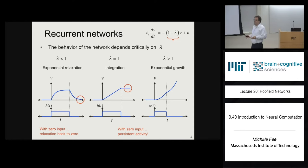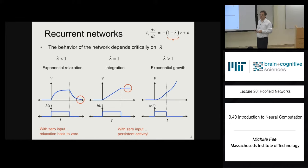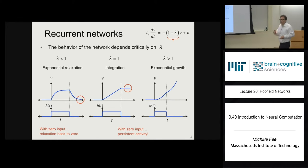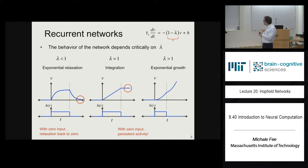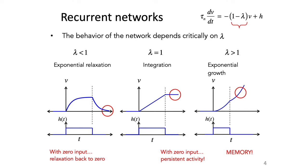Neurons in the brain don't have firing rates that just keep growing exponentially. We'll solve that problem using nonlinearities in the FI curve. The key point is that this kind of network remembers that there was an input — unlike the lambda less than 1 case where activity decays back to zero. So when lambda is greater than 1, that property is useful for storing memories.